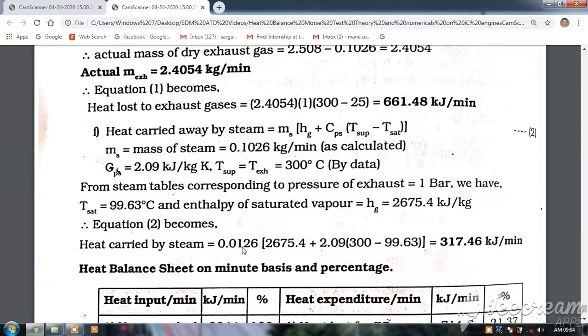You get 0.0126 - sorry, this is wrong here. The mass of steam should be 0.1026, not 0.01. So it's 0.1026 × [h_g (2675) + 2.09 × c_p × (T_sup - T_sat)] where T_sup - T_sat = 300 - 99 = 201°C, giving 317 kJ/min.